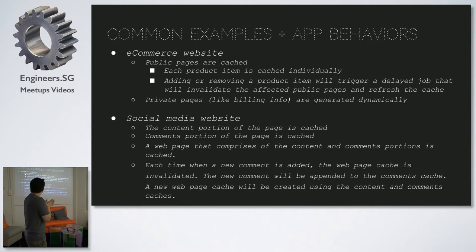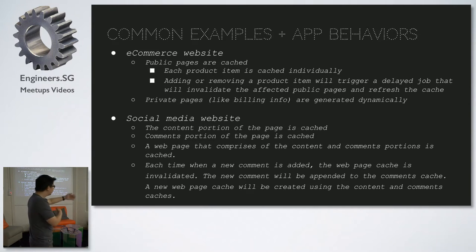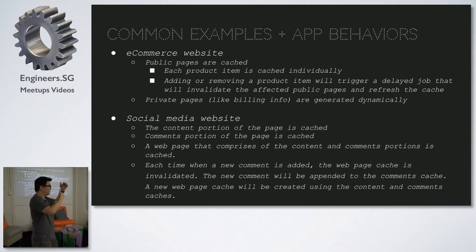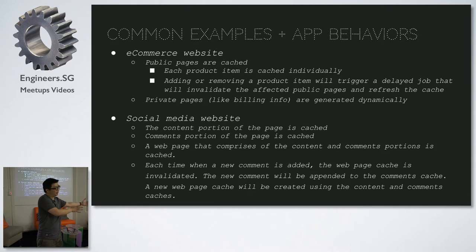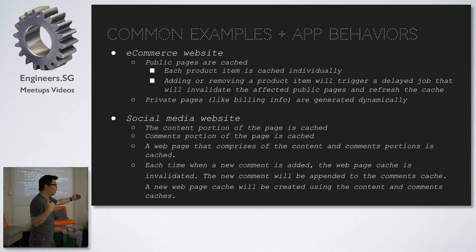The same goes for social media. A blog post's content, once written, won't change much — you can cache it. The comments section can be a separate fragment cache. The page cache is basically the blog post fragment plus the comments fragment. When a new comment comes in, you append it to the comments fragment, refresh the comment fragment, then refresh the page cache using the content fragment and the comments fragment. It'll be way faster than re-rendering the whole page.